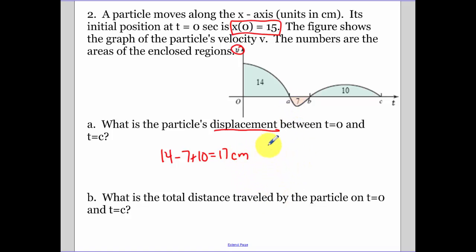Now if it's looking for final position, what we're going to do is we're going to take and add the 15 plus the 17 and get 32 centimeters. So that's our final position. But this is just its displacement. What is the total distance traveled? So you have to take the absolute value of all those. So 14 plus 7 plus 10, and we get a total of 31 centimeters.